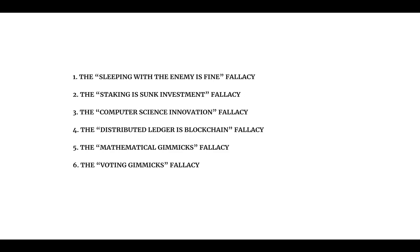Fallacy two — the staking is sunk investment fallacy: there is really no such thing as staking in proof of stake. It's just a group of trusted rich participants controlling the system. Miners are, in fact, real stakers because they sink capital in equipment, data centers, and electricity, and can only recover their investments after mining for months if not years. Fallacy three — the computer science innovation fallacy: proof of stake is just a community fiat system or subjective traditional governance system. There is no innovation and no computer science breakthrough. In fact, the central banking model is in practice a proof of stake system — participating banks make security deposits, have capital requirements, and follow rules to process transactions.